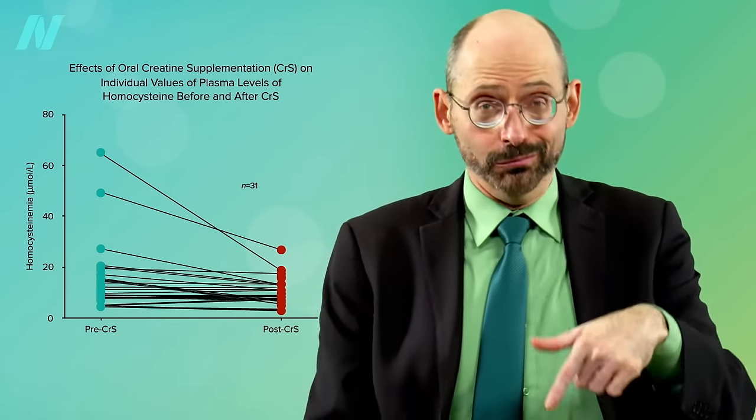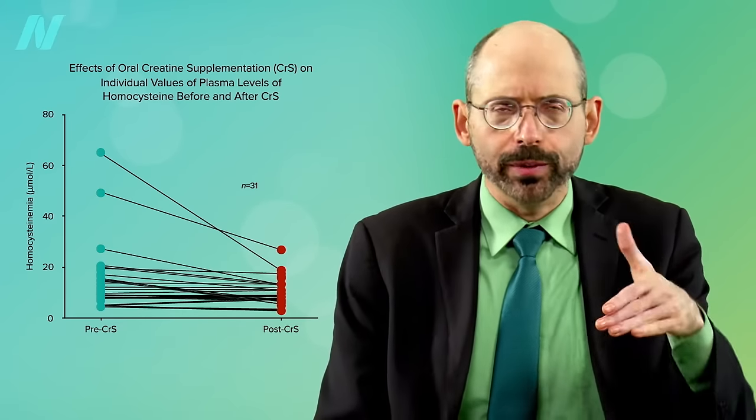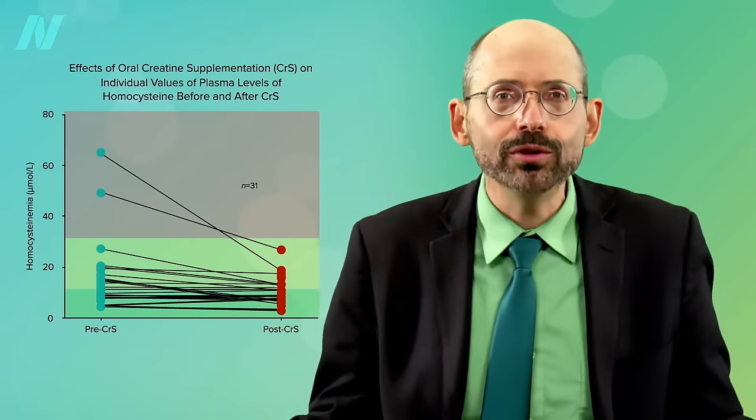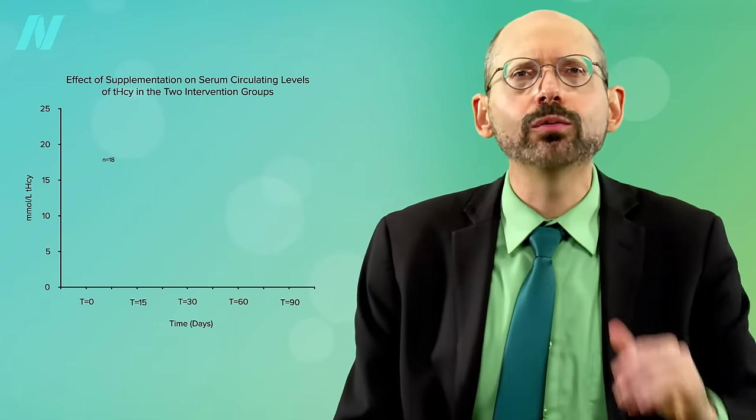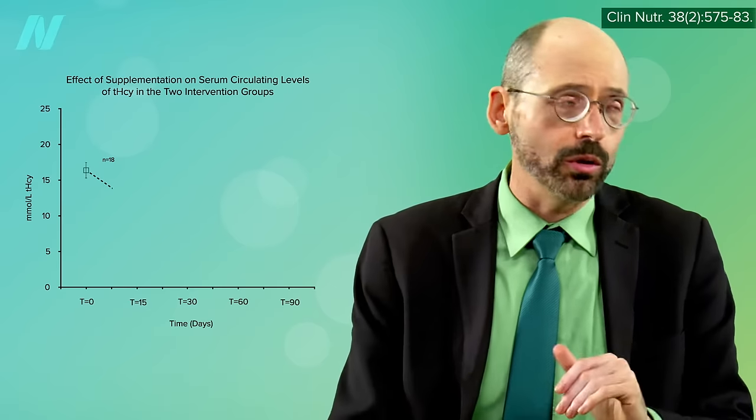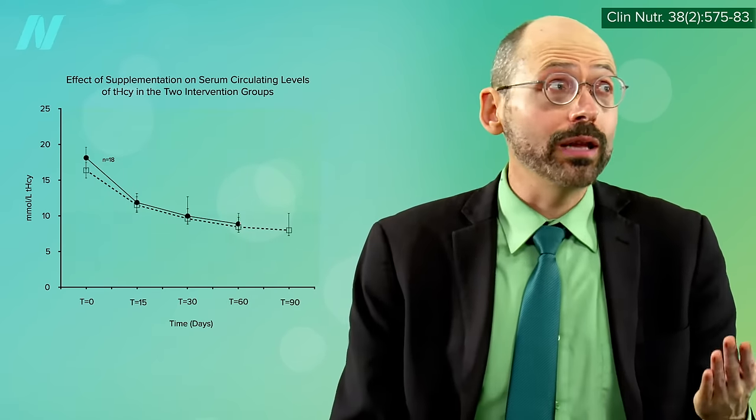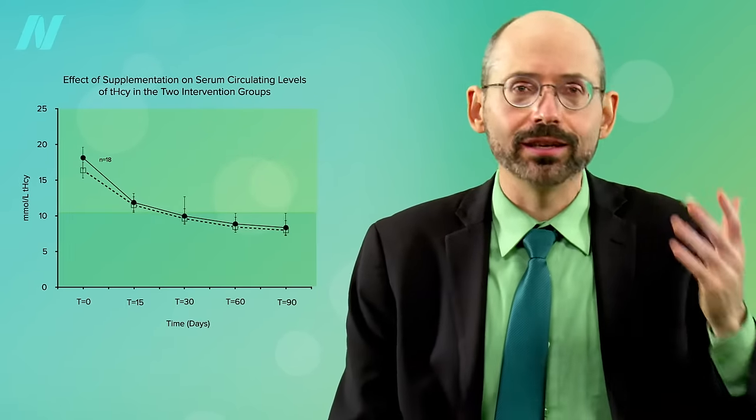Now, they didn't really normalize, which would have been under 10, but that's presumably because they weren't taking any B12. Give vegetarians and vegans vitamin B12 supplements, either daily dosing or once a week, and their levels really normalize in a matter of months.